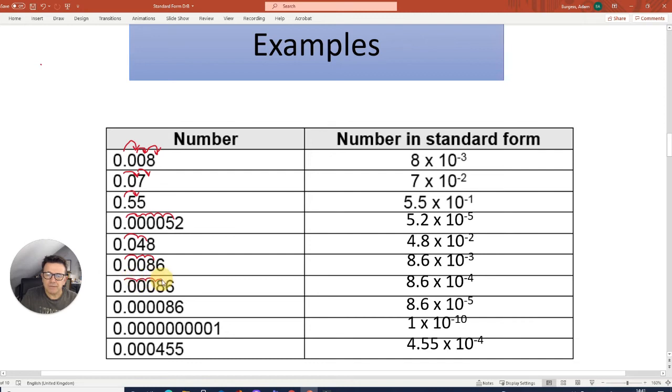1, 2, 3, 4, so that's 10 to the minus 4. 1, 2, 3, 4, 5, so that's 10 to the minus 5. Then a really small number, it's 1 times 10 to the minus 10. And this one, don't get confused, it's still 4.55 times 10 to the minus 4. I will show you in this video how to use your calculator to work that out if you don't want to do it manually.